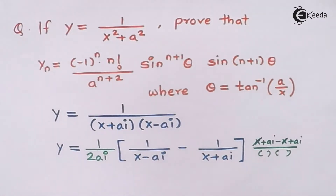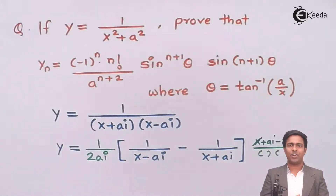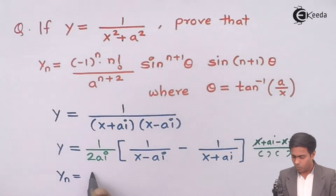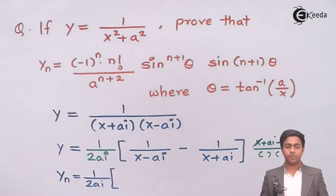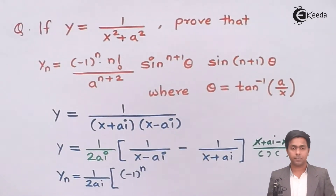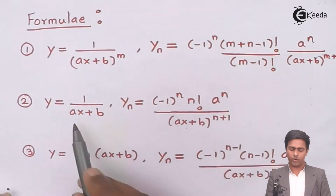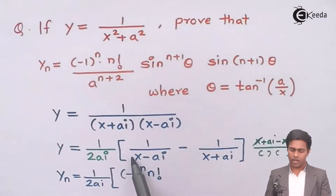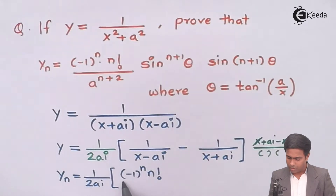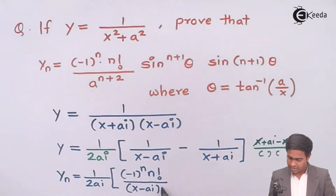Next we find the nth derivative of these two functions because now they are in the form 1 upon (ax plus b). Using the nth derivative formula for algebraic functions covered in previous videos, the nth derivative will be 1 upon 2ai times [minus 1 to the power n, then n factorial, times a raised to n]. The coefficient of x here is 1, so 1 raised to n is 1, and in the denominator we get (x minus ai) raised to n plus 1.